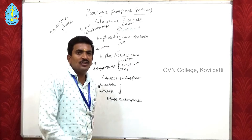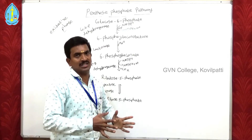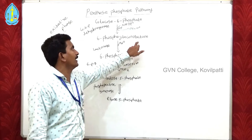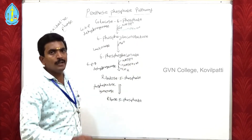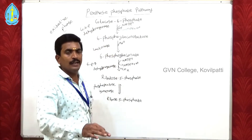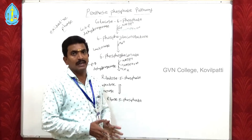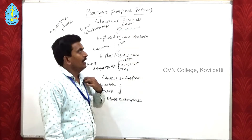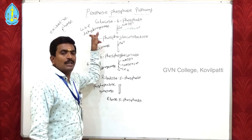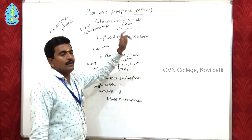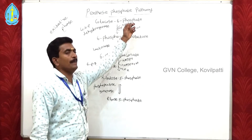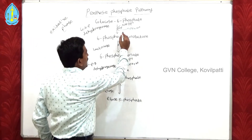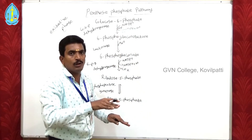First, the glucose 6-phosphate, which is synthesized in glycolysis or which may directly enter the cell, is converted into 6-phosphogluconolactone by the enzyme glucose 6-phosphate dehydrogenase. Whenever a dehydrogenase enzyme is involved, one NADP+ is reduced to form NADPH. Here, glucose 6-phosphate dehydrogenase is a magnesium-dependent enzyme. This enzyme reduces NADP+ into NADPH and H+. The formation of NADPH helps maintain the cytosolic balance of NADPH.